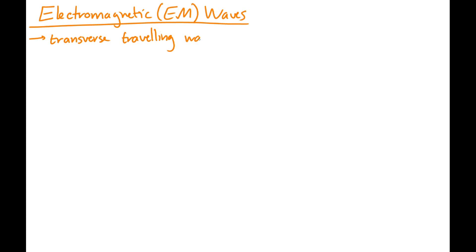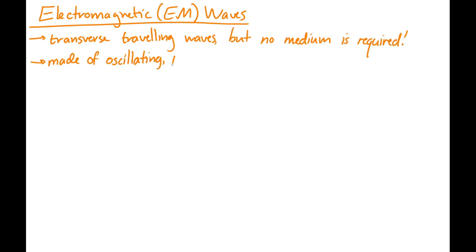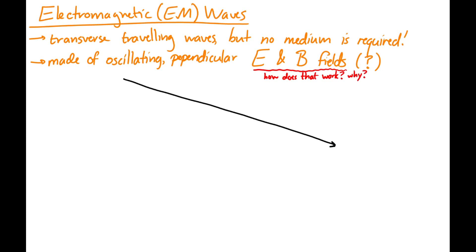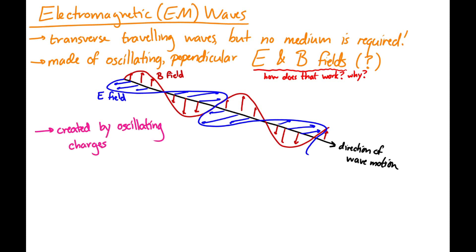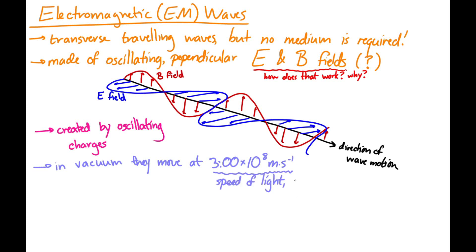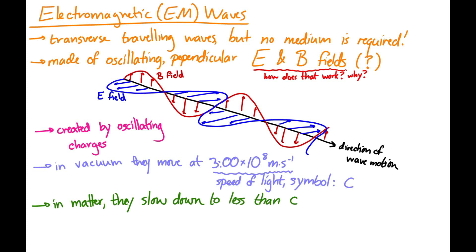Electromagnetic waves are transverse traveling waves that don't require a medium — they can move through vacuum. They consist of oscillating, mutually perpendicular electric and magnetic fields traveling along a propagation axis, created by oscillating charges. When electromagnetic waves move through vacuum, they travel at three times ten to the eight meters per second — the speed of light, designated with a C. In matter, they slow down, and how much depends on properties of the material we'll discuss later.